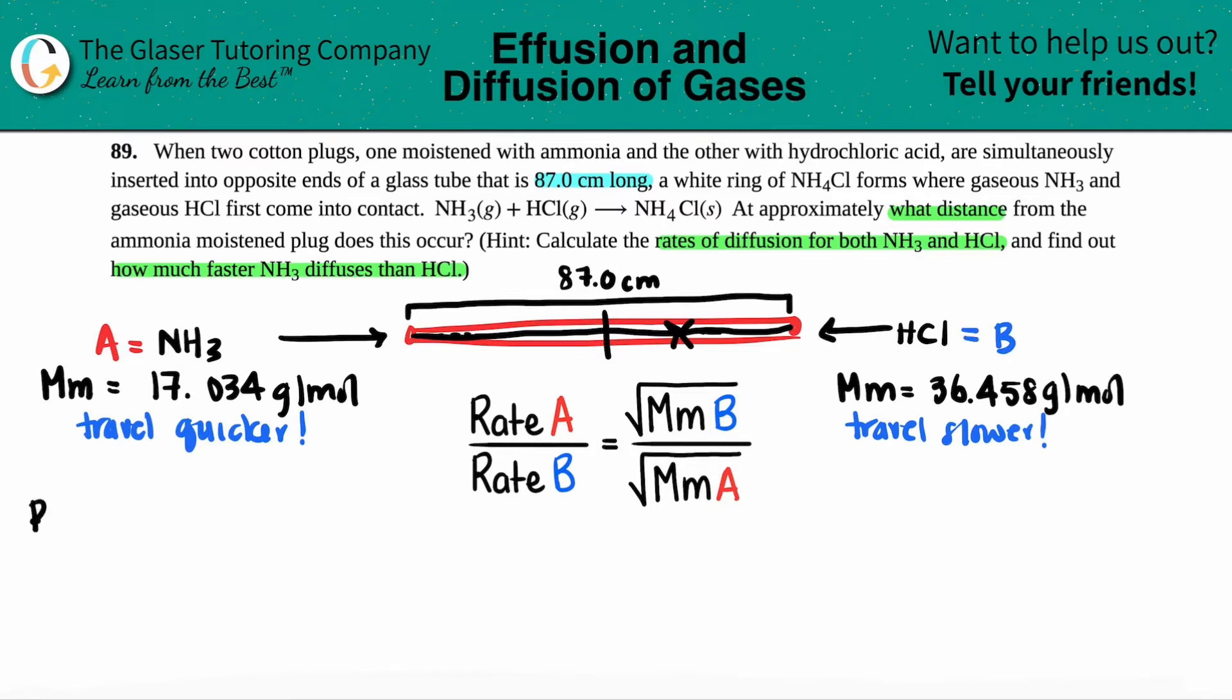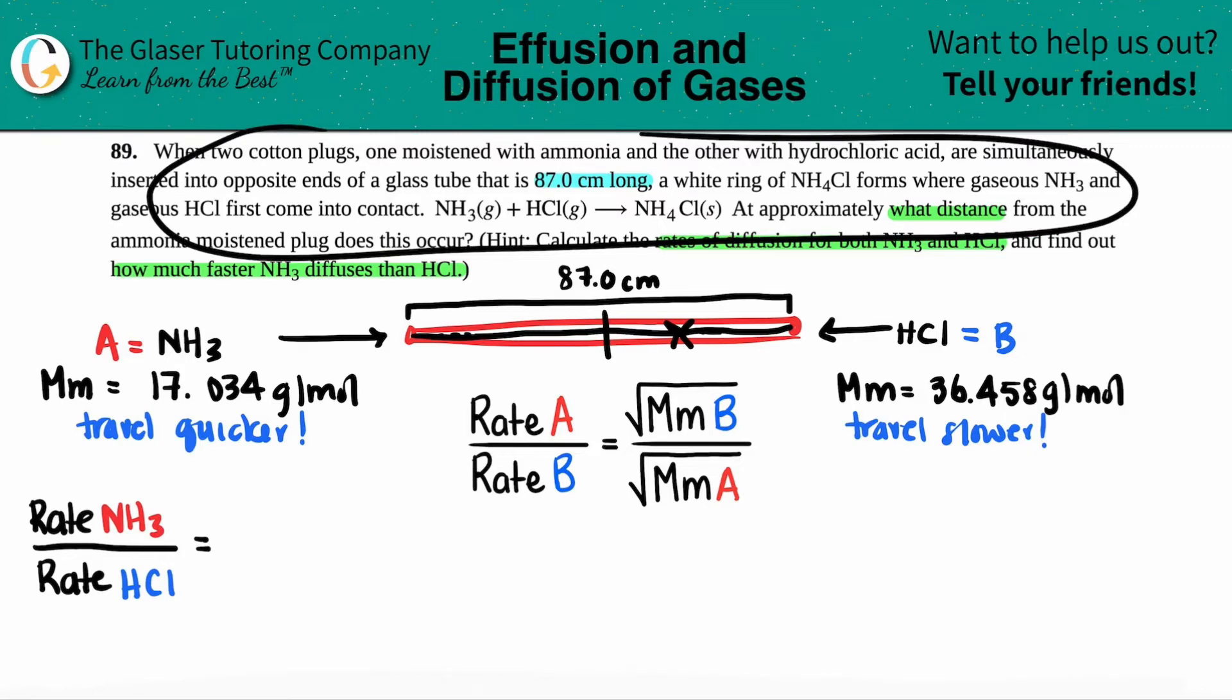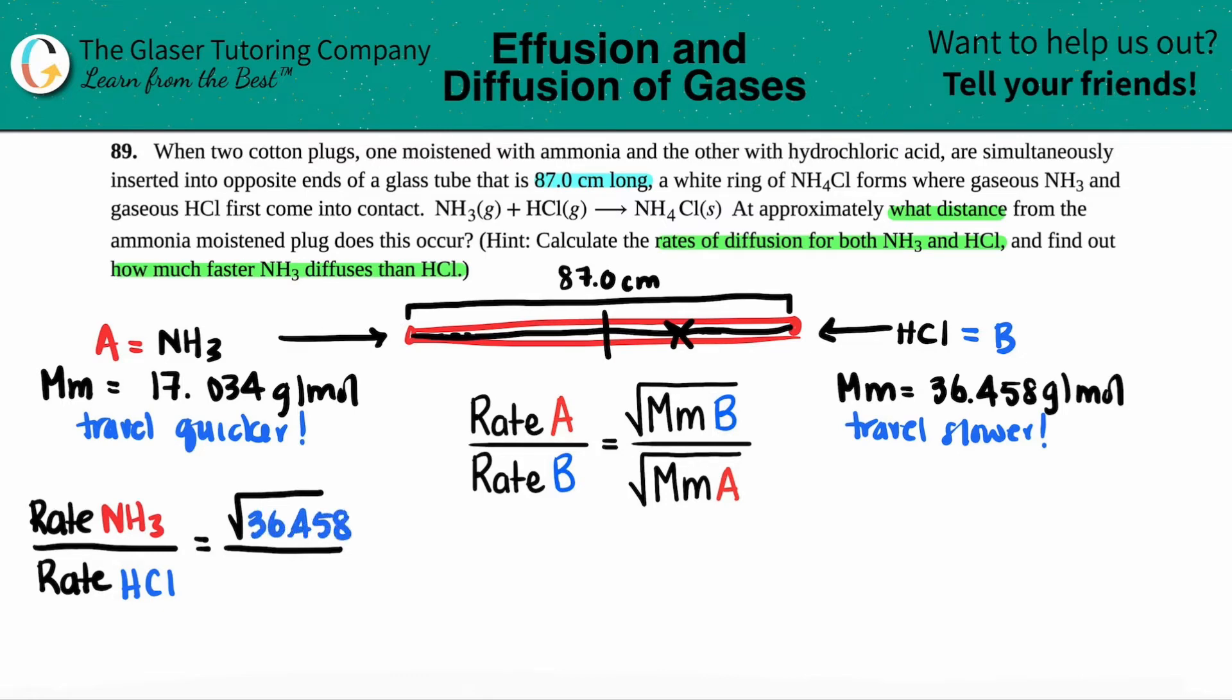We're looking for rate A divided by rate B. We're going to find out what that NH3 rate is in comparison with HCl. We just have to find a comparison number since they didn't tell us how fast either of them are traveling. But we know the molar masses. MM is molar mass of their respective gases. So this is the square root of B, which is HCl, that's 36.458, divided by the molar mass of NH3, the quicker one, 17.034.